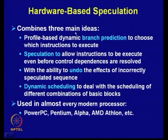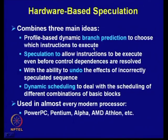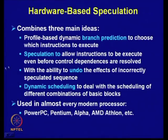Hardware-based speculation combines three ideas. The first is profile-based dynamic branch prediction to choose which instructions to execute — using sophisticated prediction techniques such as correlating predictors or tournament predictors. The second is speculation to allow instructions to execute even before control dependences are resolved. Earlier, with dynamic scheduling and branch prediction, instructions were not executed until control dependences were resolved; this is the key step in hardware-based speculation.